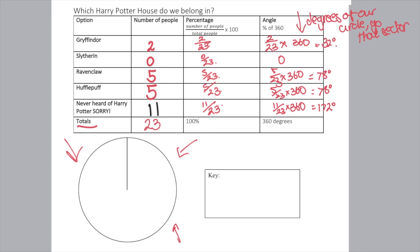Gryffindor is going to have 32 degrees, Ravenclaw will have 78, Hufflepuff 78, and never heard of Harry Potter will have 172. Now we can start drawing this in our pie chart. You'll need to draw a very nice circle and use a protractor to measure out the angles. You always start with the biggest angle first, which is 172. Then we go with the next biggest, 78 and 78, and the last one, Gryffindor, is 32.